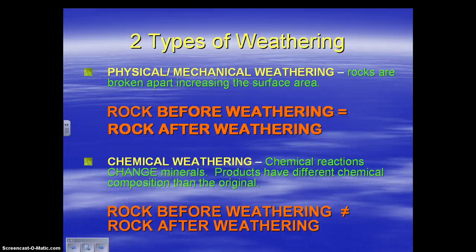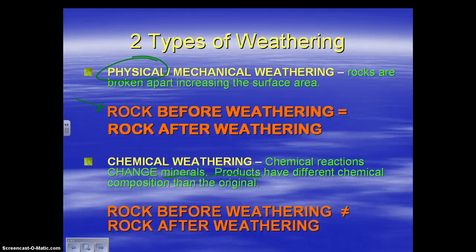Simply put: if the rock that you have to begin with is the rock that you have at the end, that's going to be physical weathering — also referred to as mechanical weathering. Chemical weathering is when the minerals themselves have been changed. The product, what you have at the end, is something actually different at the chemical level than it was originally.